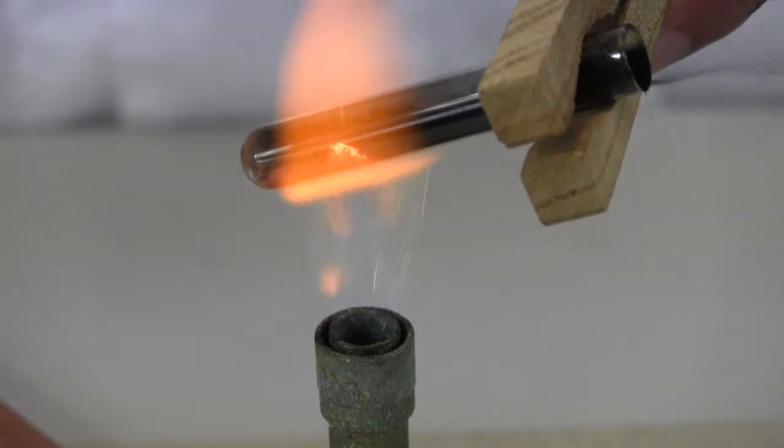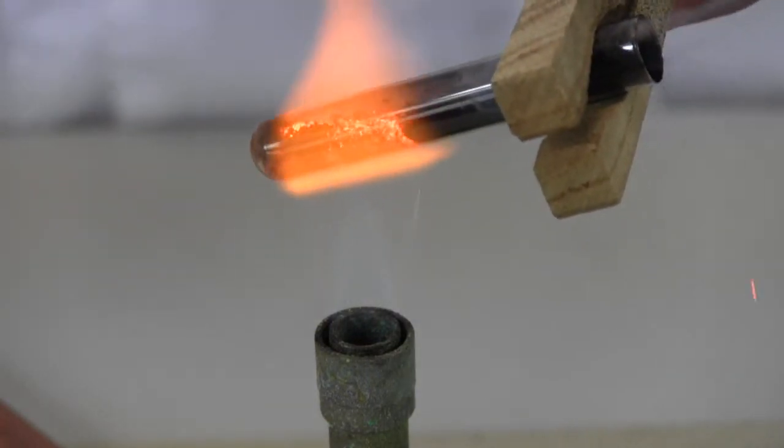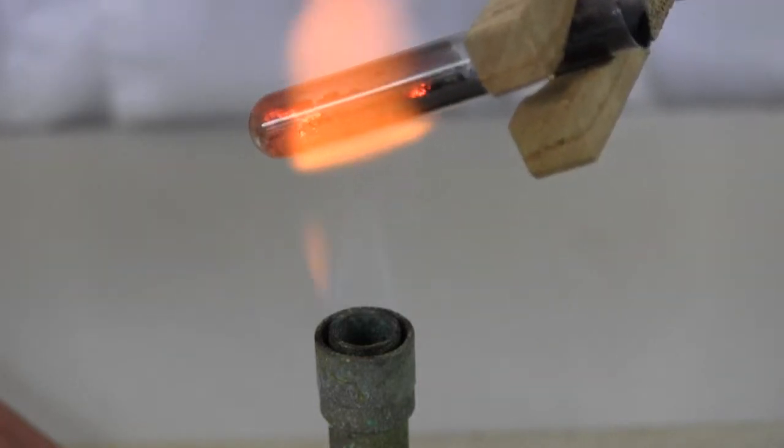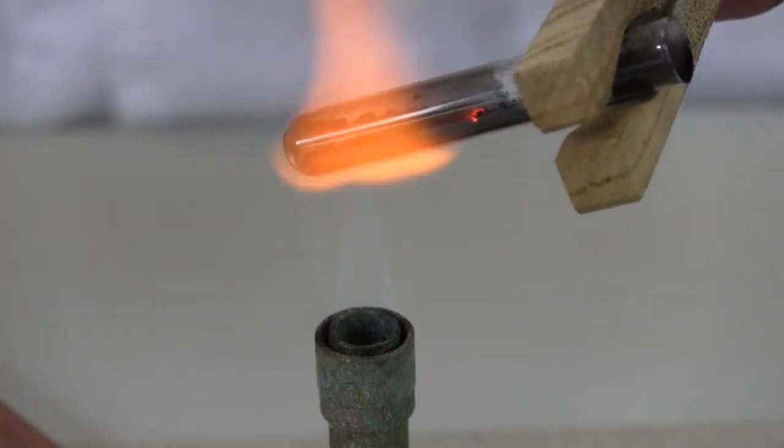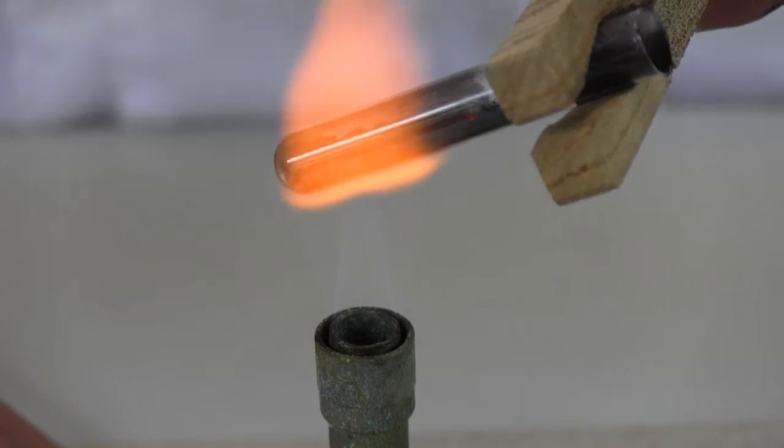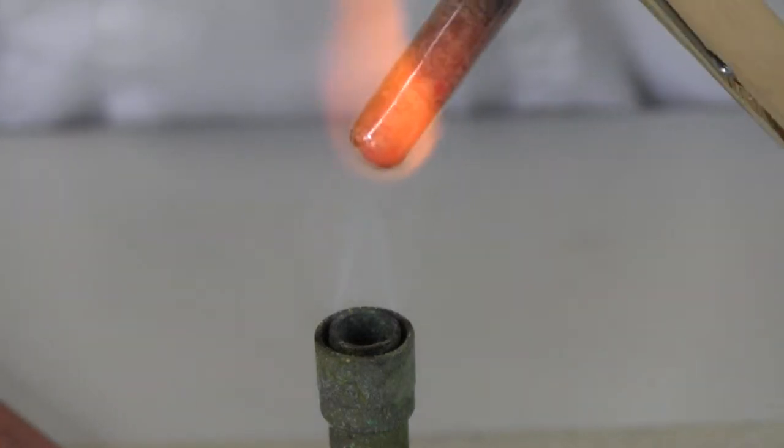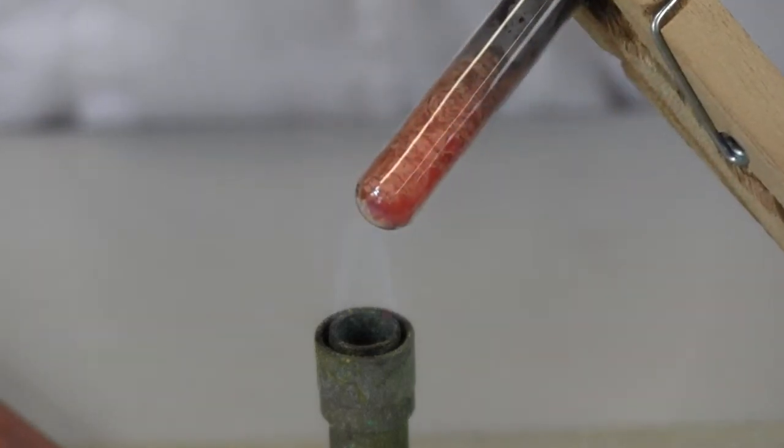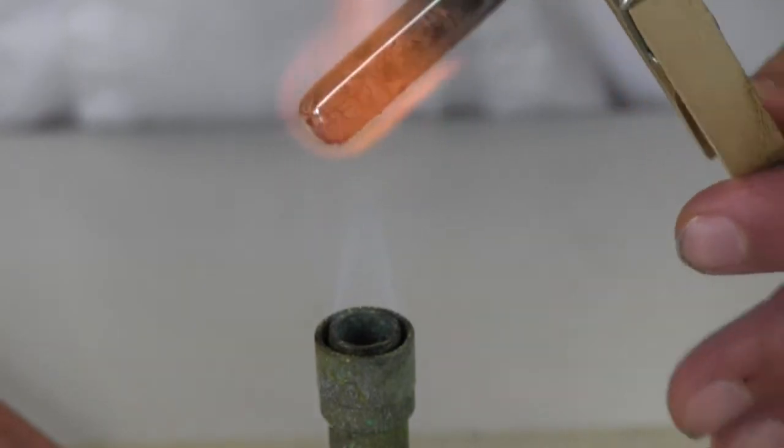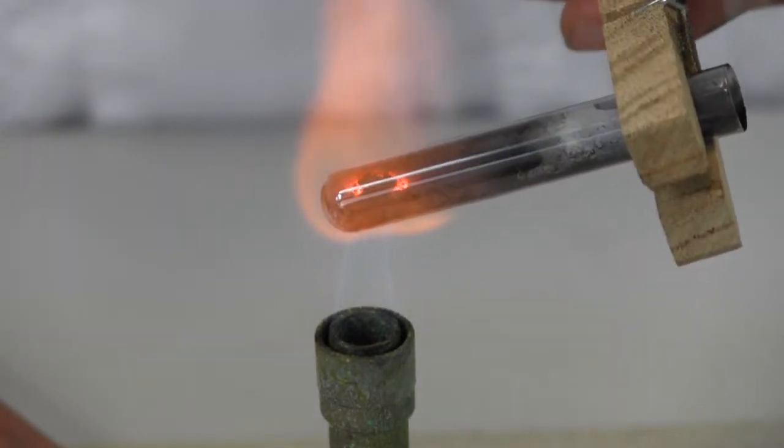The copper oxide is being broken back down into copper metal and oxygen. The oxygen quickly combines with the carbon and forms carbon monoxide, an invisible gas that flows out of the test tube.